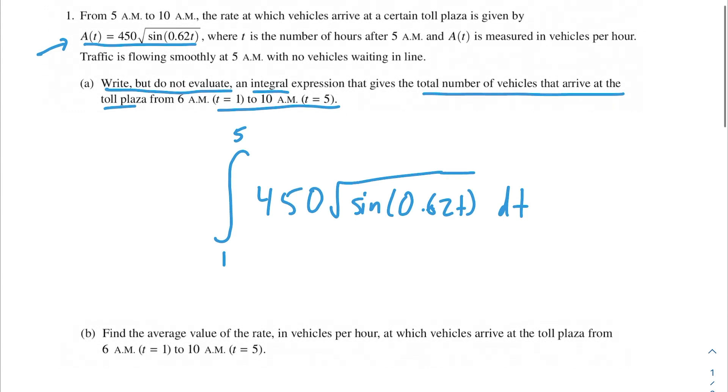This should be our answer for part A. We've got our bounds, the actual integral. We're integrating the rate at which vehicles arrive to get the total number of vehicles, and we have our dt at the end.